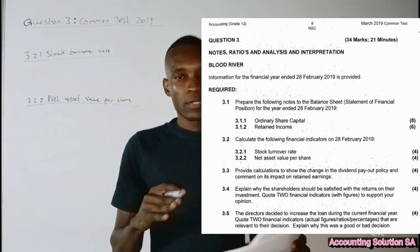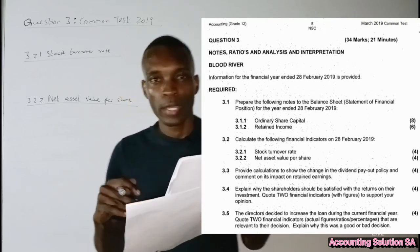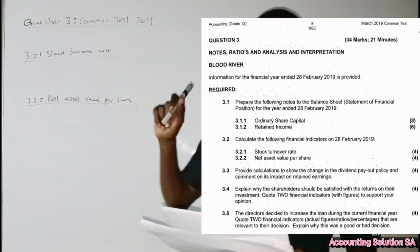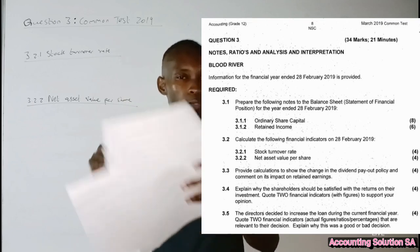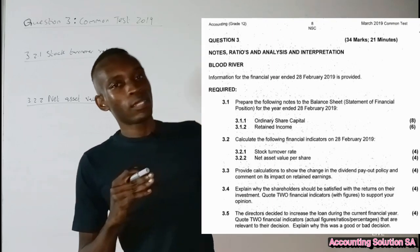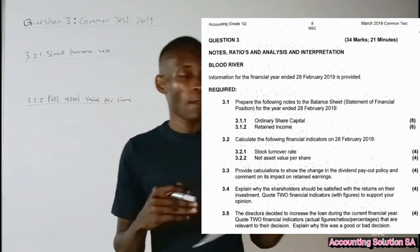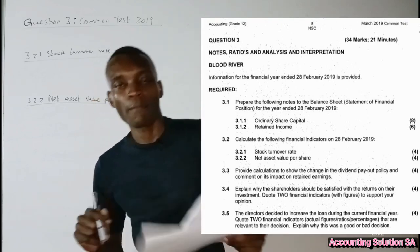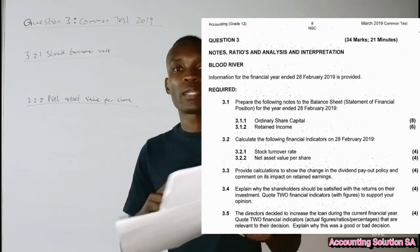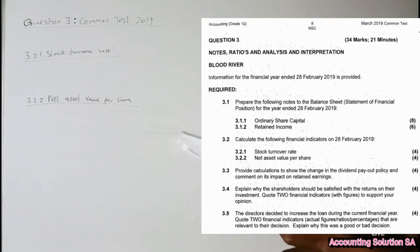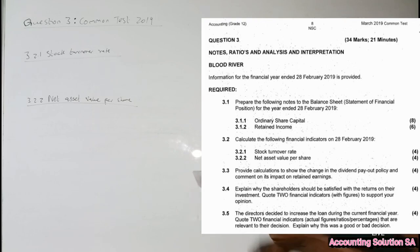Hi Grade 12. In this video I decided to do the last part for the question paper written in March 2019 — a common test. I did question one, question two, and question three for retained earnings notes and ordinary share capital notes, but I left the part for ratios related to company finances. Let's do it in this video so you can gain all the knowledge you need when you write your test or examination. Question 3.1 was covered — you can check the playlist.